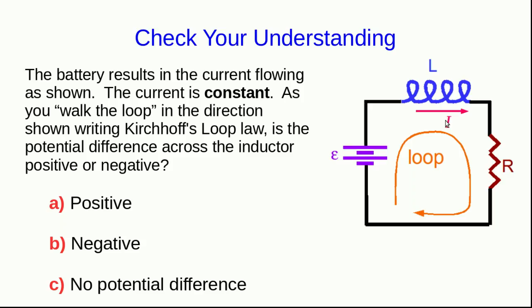Time to check your understanding. So here's a simple circuit with a battery, an inductor, and a resistor, and there's a current flowing as shown, and that current is constant. And we've learned about walking around a loop to write Kirchhoff's loop law. So you would be going around the loop and writing down a series of potential differences, which you know add up to zero. And as you do so, you have to write down a potential difference across this inductor. Well, is that potential difference positive or negative, or is there no potential difference at all?